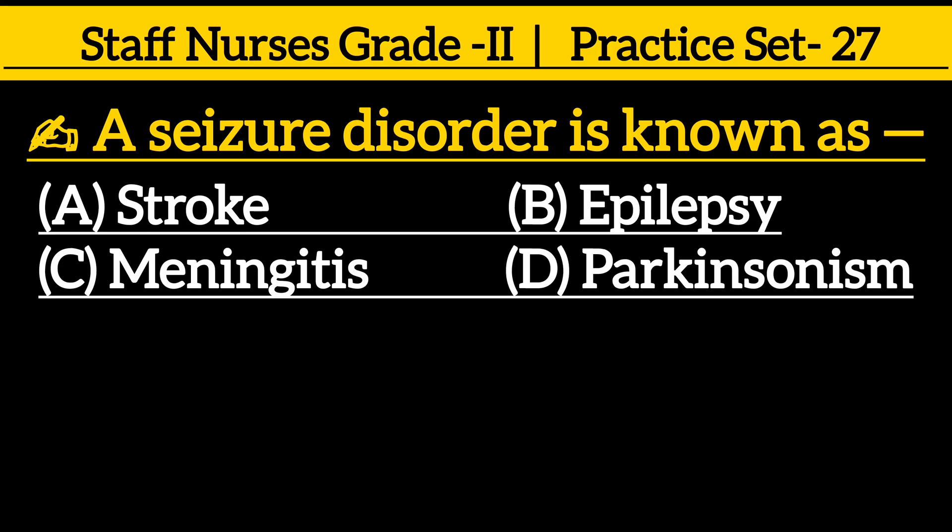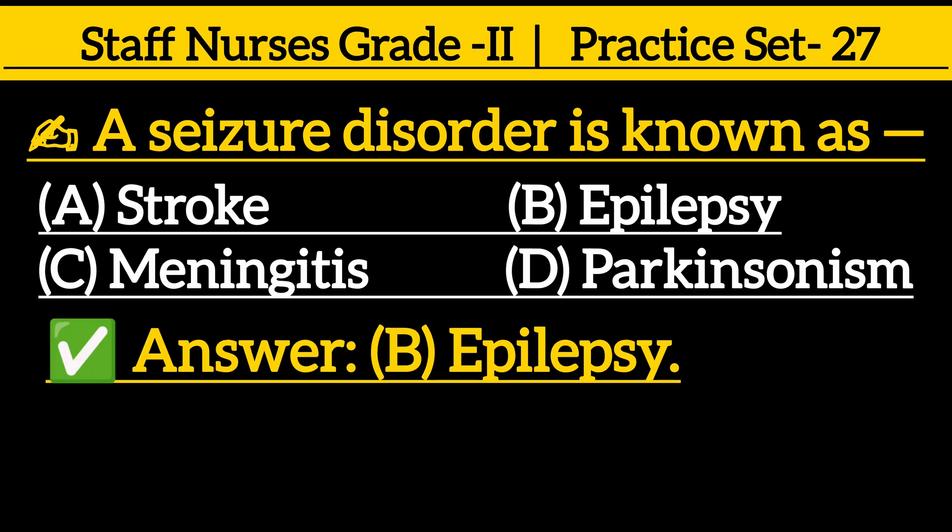First one: a seizure disorder is known as — option A: Stroke, option B: Epilepsy, option C: Meningitis, option D: Parkinsonism. Correct answer is option B: Epilepsy.